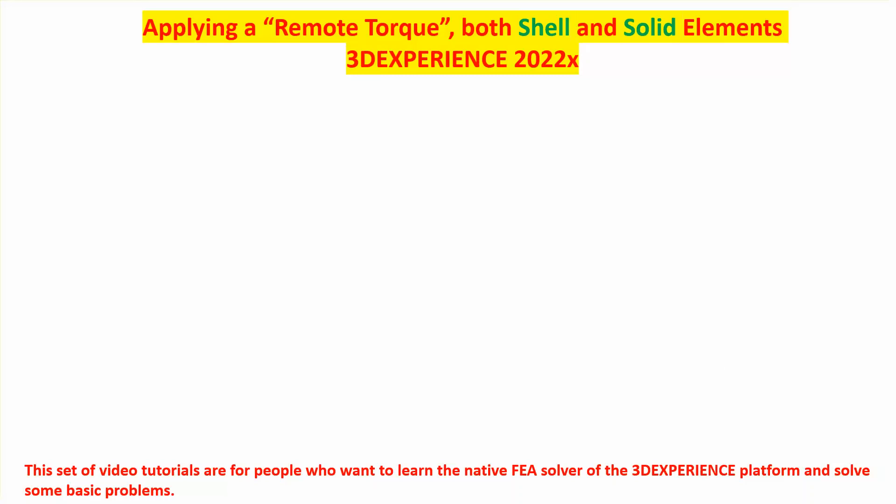In this short video segment I'm going to show you how to use and apply a remote torque icon load in 3D Experience release 2022x. I'm going to apply it for both shell element and solid element models. This is not something advanced or unknown — it's just that if you're an Abaqus or CATIA user, you know how to do this, but the names and icons are different. So if you're new to 3D Experience, your previous knowledge may not help you find this remote torque icon.